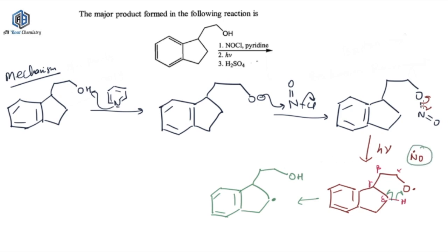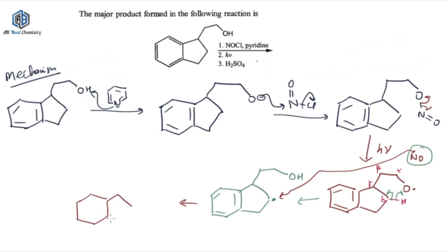Now remember we were having a NO radical in this step. That NO radical will not go anywhere — it will be abstracted by this radical. These two radicals will fuse together to form a new bond, forming NO. So a delta-substituted NO and OH will be formed in this step — that's what happens in the Barton reaction.